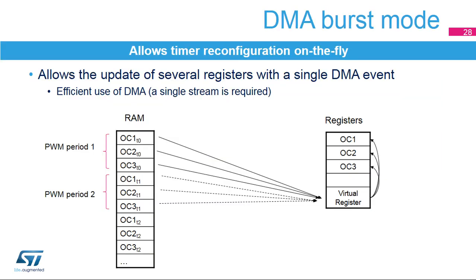The timer includes a DMA burst mode to have multiple registers reprogrammed with a single DMA stream. This allows the modification of several runtime parameters simultaneously, for instance duty cycle and frequency of several channels, or dynamically changing the timer configuration by writing the configuration registers. The example shows how a table containing three compare values can be transferred into the compare registers with a single DMA stream when a new PWM period starts.